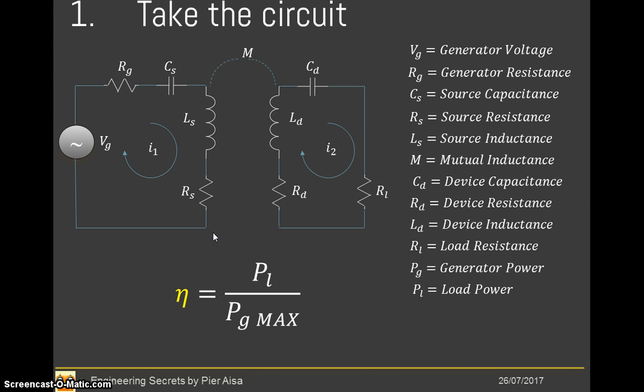In this circuit we recognize the following elements. We have Vg, that is the generator voltage, Rg, that is the resistance of the generator, the source capacitance, the source inductance, and the resistance of the source. All the parameters of the source will be highlighted with an S index. On the other side we have the device, that is the receiver of the wireless energy transfer, that will have LD, the inductance of the device, CD, the capacitor of the device, RD, the resistance of the device, and finally RL, that is the load, where we would like to provide energy from the generator.